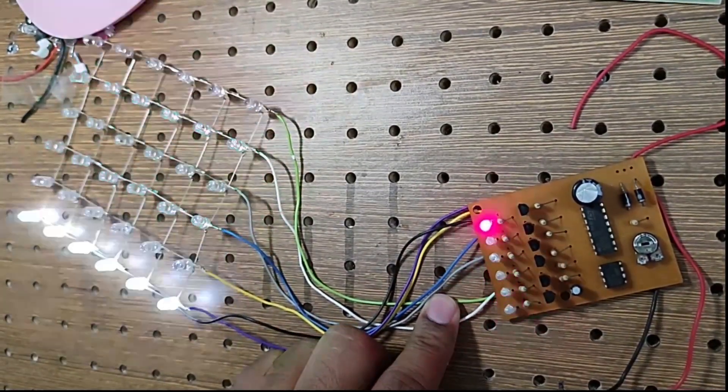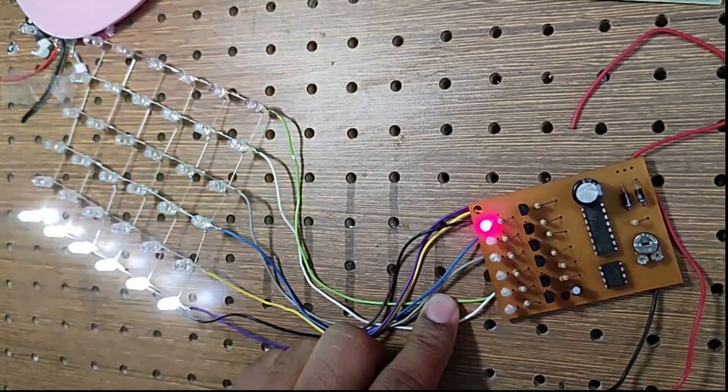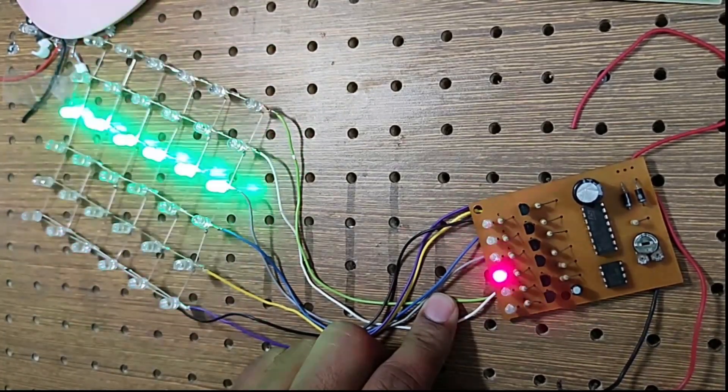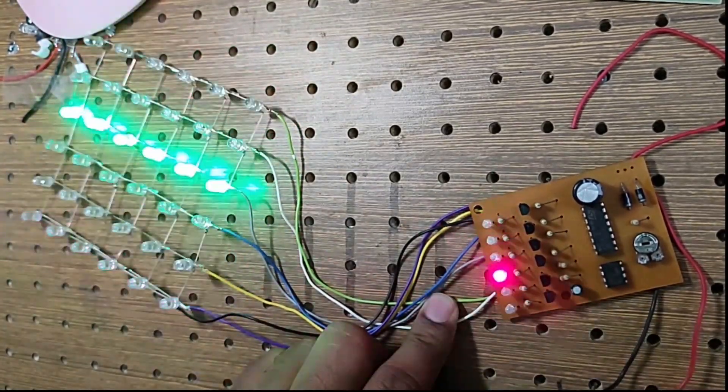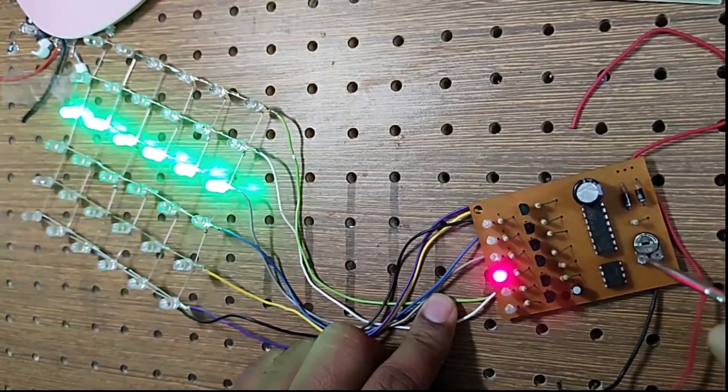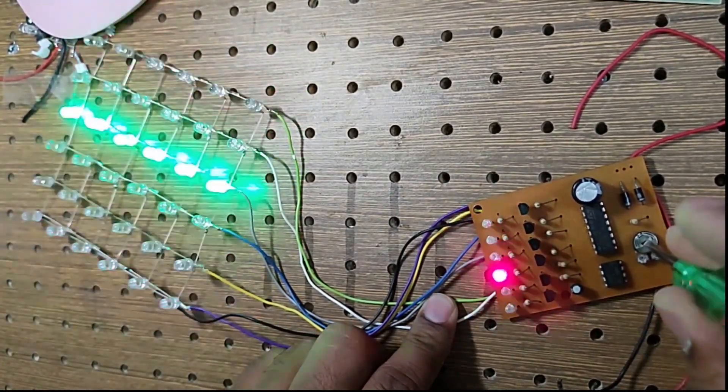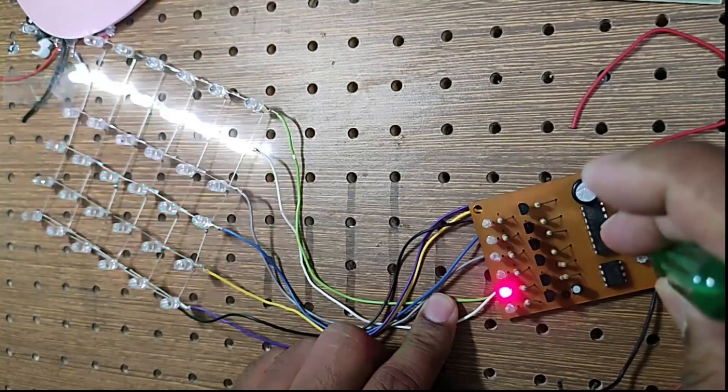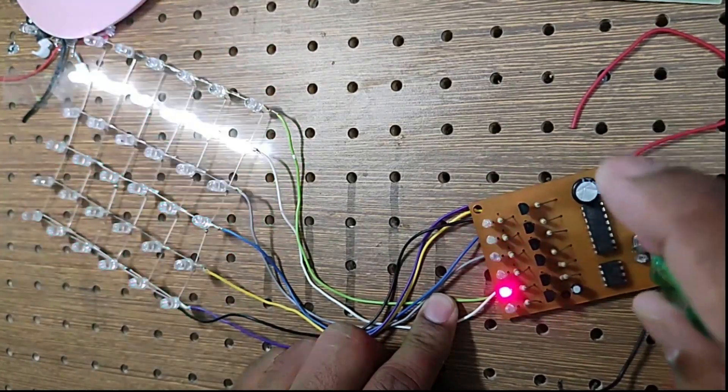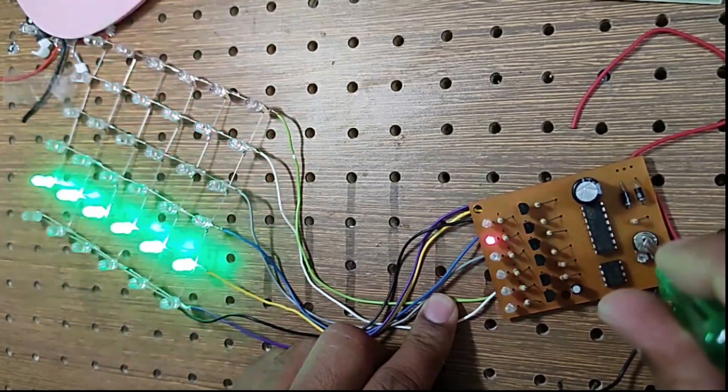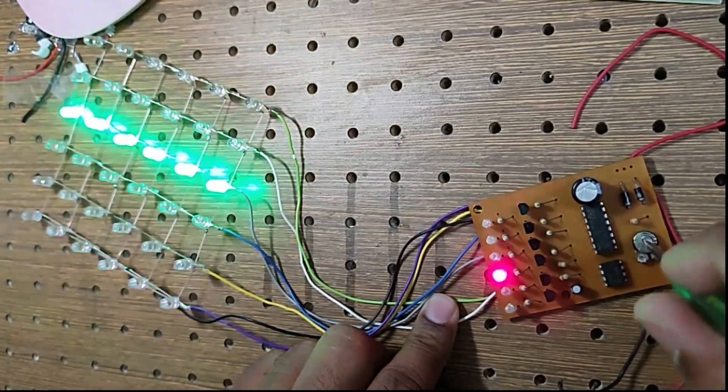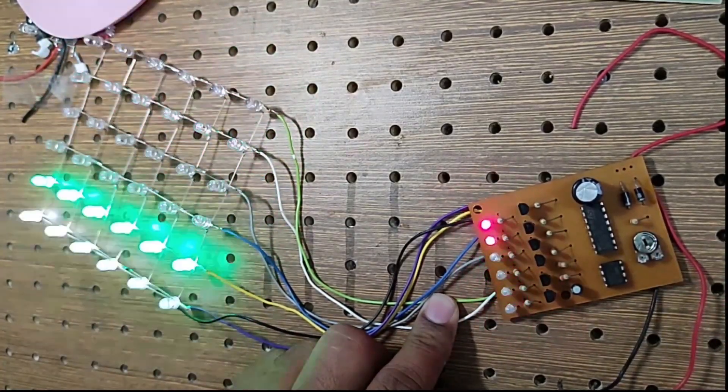Now, what is the main drawback of this LED chaser circuit using 555 and decoder? We can't change the pattern. We can only increase and decrease the speed of the pattern. Here it's decreasing; now we can increase it. But we can't change the pattern. This is the main drawback.